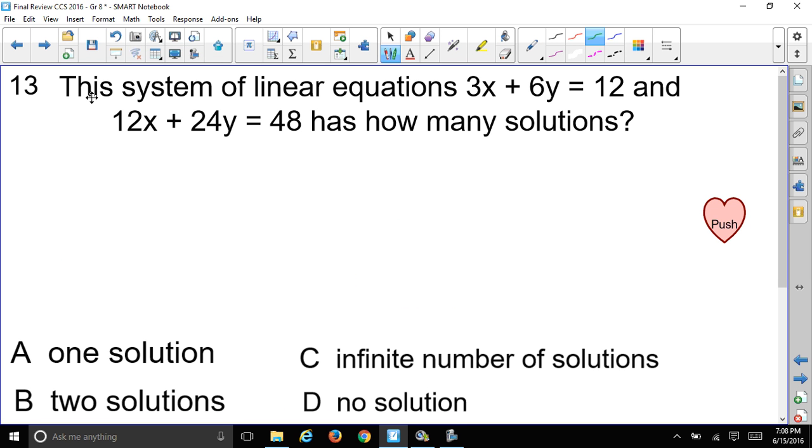Okay, here's our first question. This system of linear equations 3x plus 6y equals 12, and 12x plus 24y equals 48, has how many solutions?